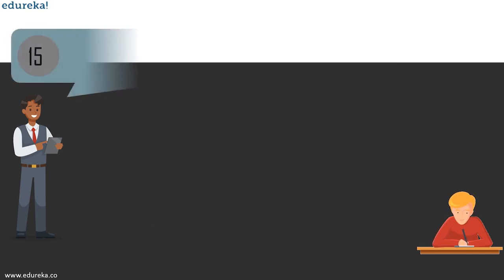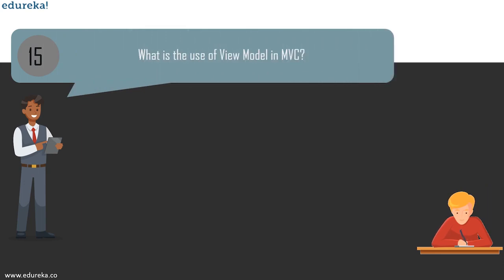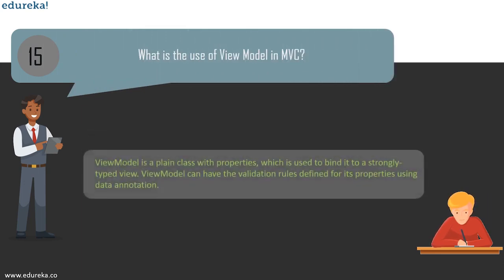The next question is: what is the use of ViewModel in MVC? A ViewModel is a plain class with properties which is used to bind to a strongly typed view. It can have validation rules defined for its properties using data annotations. This is the main use of ViewModel in MVC. These are some of the questions for beginners.